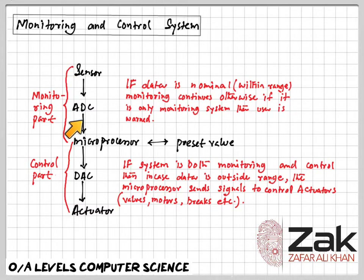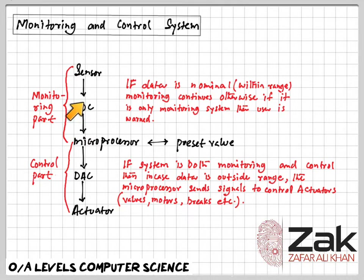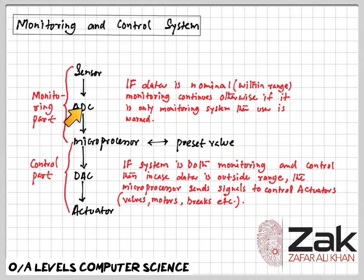A computer cannot make any sense of these physical quantities and the data needs to be converted into digital form. This is usually achieved by an analog-to-digital converter (ADC), which converts physical values into discrete values.